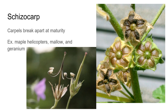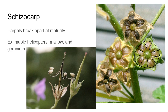A few of these fruit categories can overlap with each other. A schizocarp is a general term for any fruit that breaks apart at maturity, splitting at the individual carpels — so it's a fruit with multiple fused carpels that breaks apart as it matures. Maple helicopters are an example. Mallows, also called cheeseweeds, have fruits that look like a little cheese wheel, and each compartment breaks apart at maturity with seeds inside. A geranium also shows ballistic seed dispersal — it starts as a solid tube then splits open as it dries, shooting and hurling the seeds out.